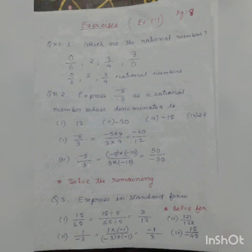Next, we have to make the denominator minus 30. Minus 5 by 3, denominator 3 can be converted to minus 30 if we multiply it by minus 10. So the numerator also should be multiplied by minus 10. It will give us 50 by minus 30.